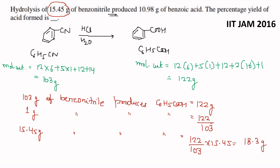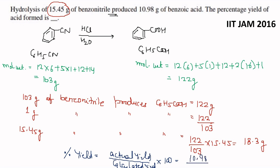Now percentage yield — percentage yield kya hota hai: actual yield divided by calculated yield into 100. So actual yield is 10.98 gram and calculated yield is 18.3 gram. So percentage yield = 10.98 divided by 18.3 into 100, which comes out to be 60%. So the percentage yield of the acid formed is 60%.